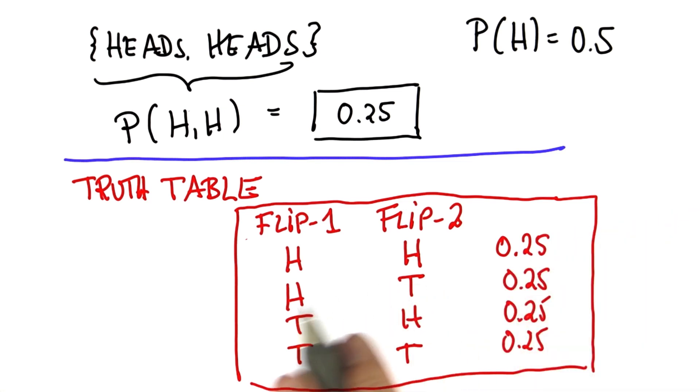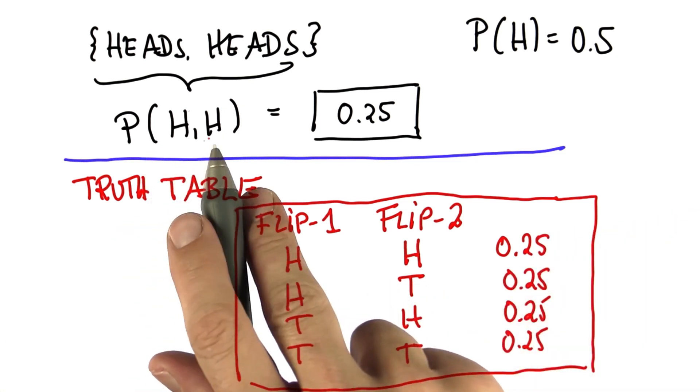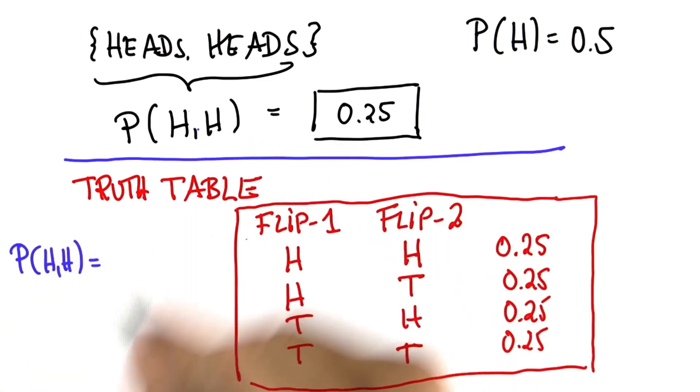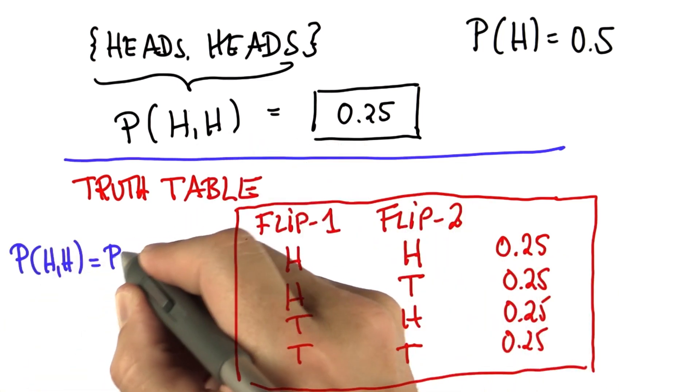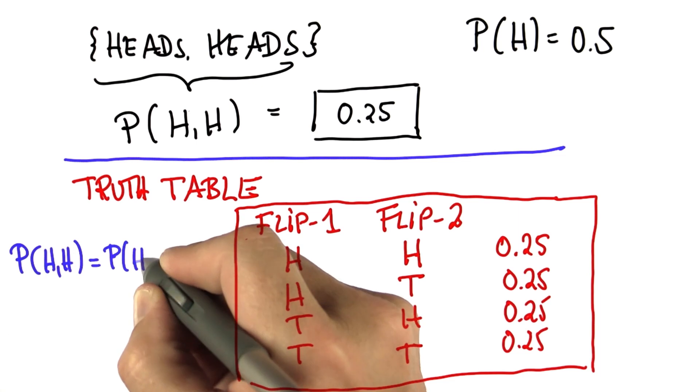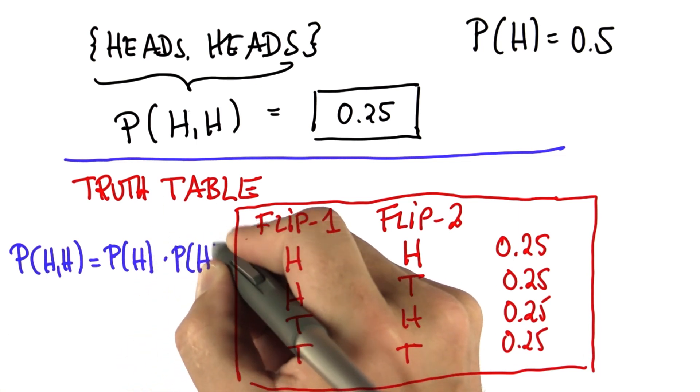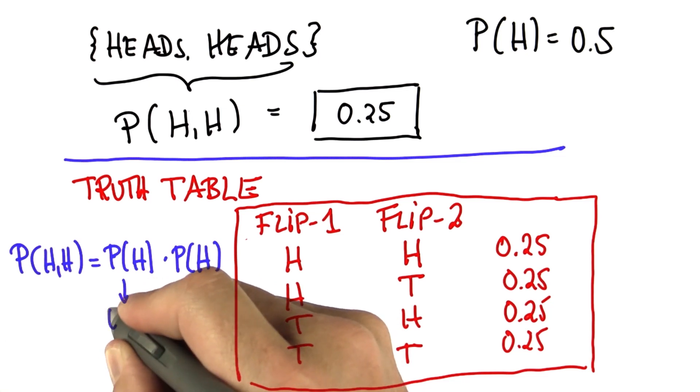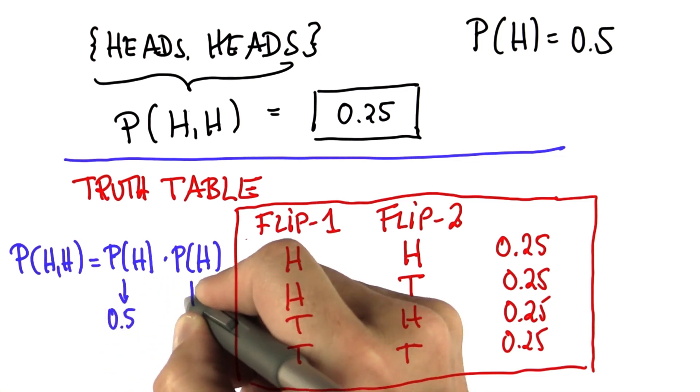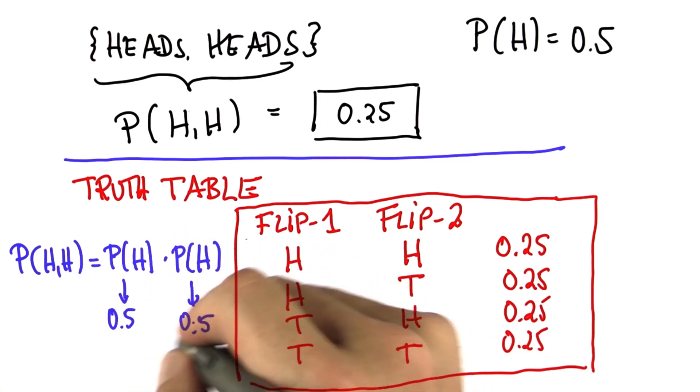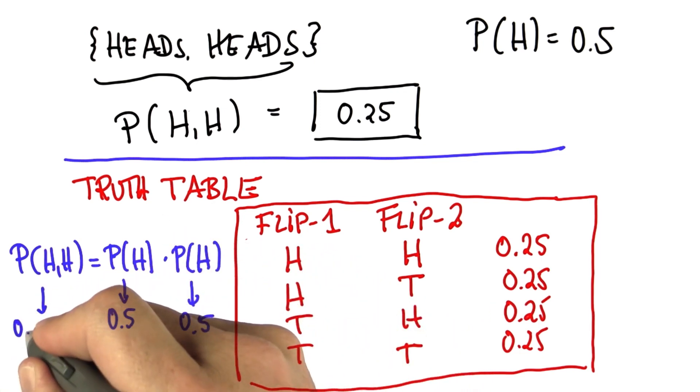Another way to look at this is, the probability of head followed by head is the product. What are the chances of the first outcome to be heads multiplied by the probability of the second outcome to be heads? The first is 0.5, as is the second, and if you multiply these two numbers, you get 0.25, or a quarter.